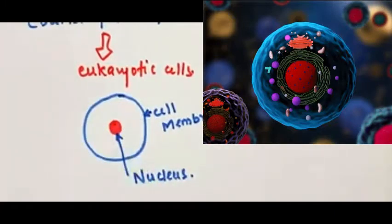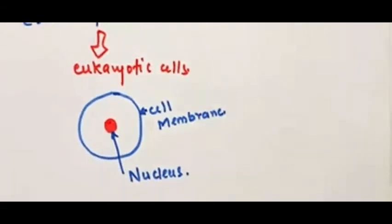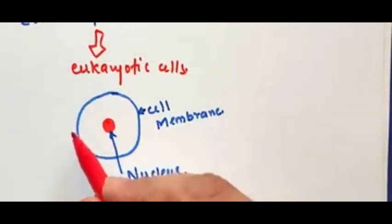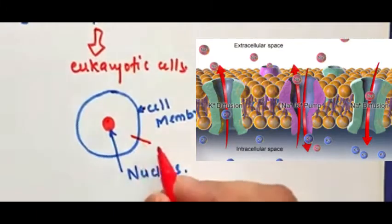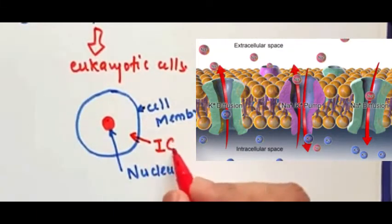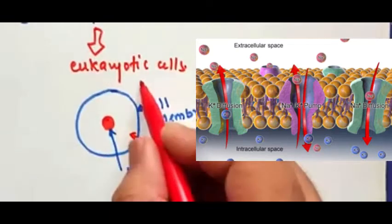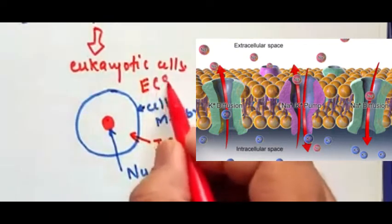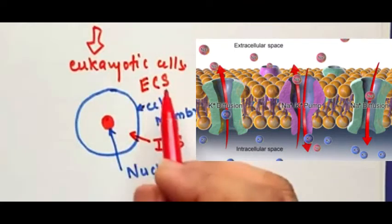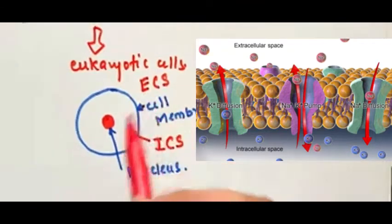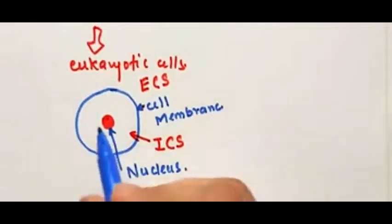Now let's talk about compartments. Within the cell membrane, the entire area which covers the nucleus is called the intracellular space. Whatever is beyond the cell membrane is basically the extracellular space. It's as simple as that — within the cell membrane is the intracellular space, and outside the cell membrane is the extracellular space.